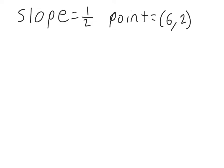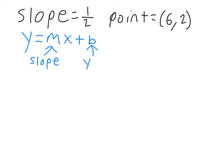Alright, so first we're going to start where I give you the slope and a point that the line goes through, and I want you to give me the equation. So, remember, the equation of a line can be written like this: y equals mx plus b, where m is your slope and b is your y-intercept. So, first we're going to start by plugging in the slope. Since we know the slope, we're going to say y equals — now instead of writing m, we write the slope, which is 1/2 — and then write the rest of it: x plus b.